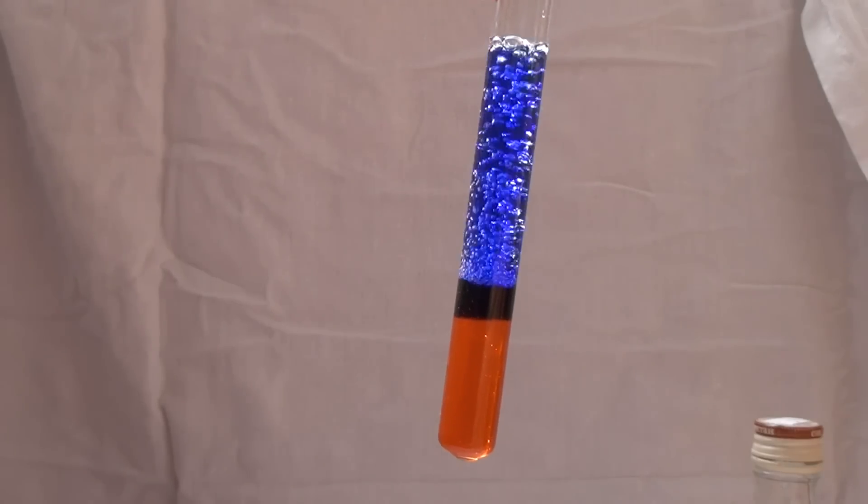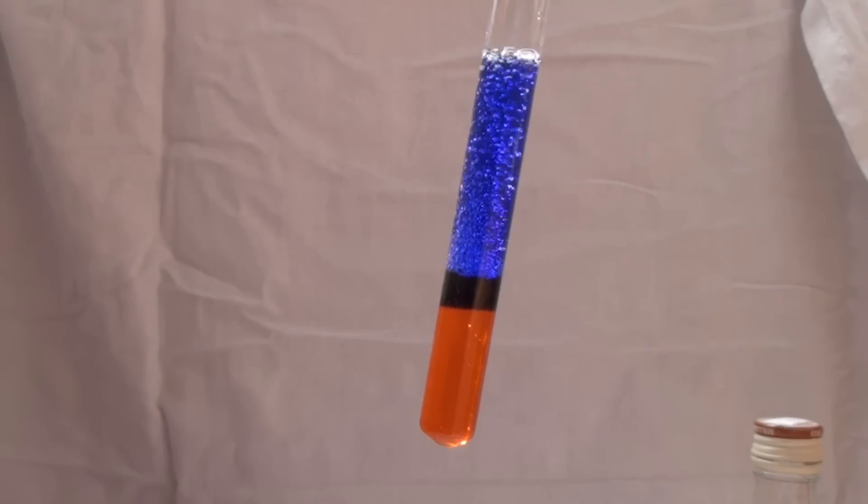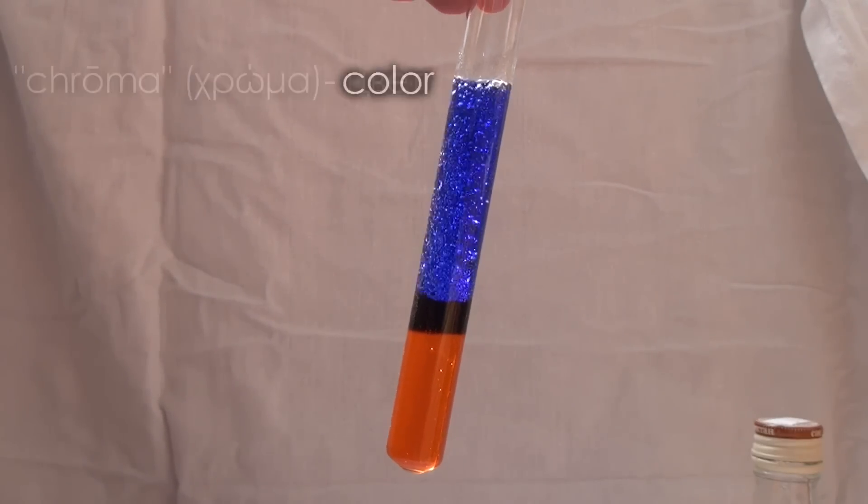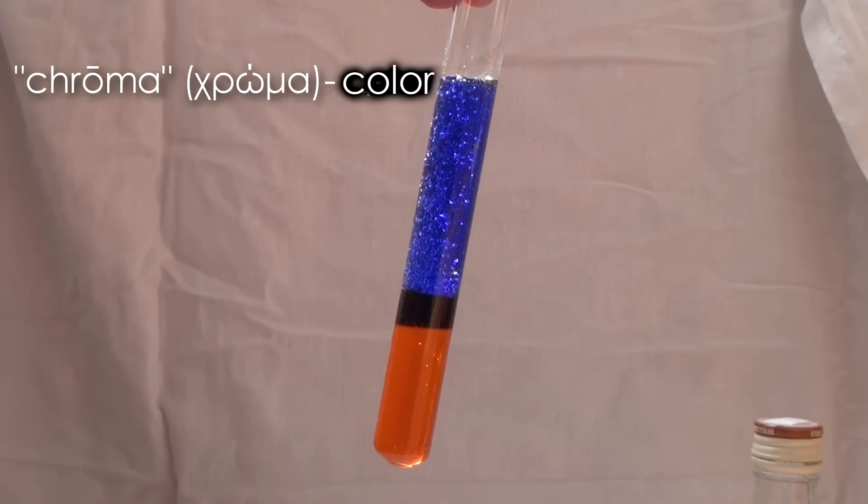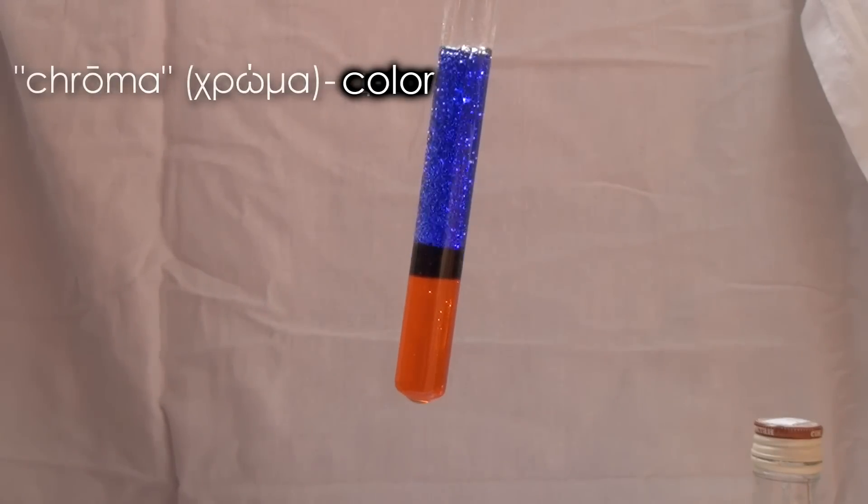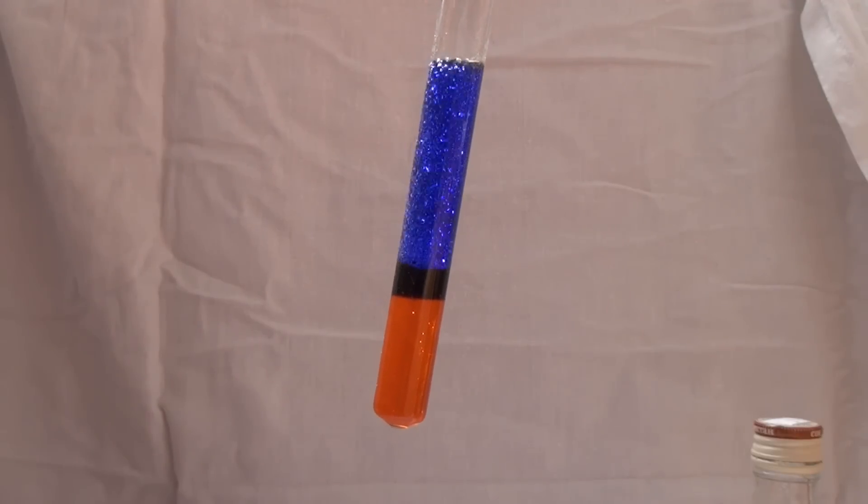This experiment demonstrates interesting properties of chromium. The metal name comes from the Greek word chroma, which means color. Such a name was chosen because different chromium compounds, depending on the degree of oxidation, can have almost all colors of the rainbow.